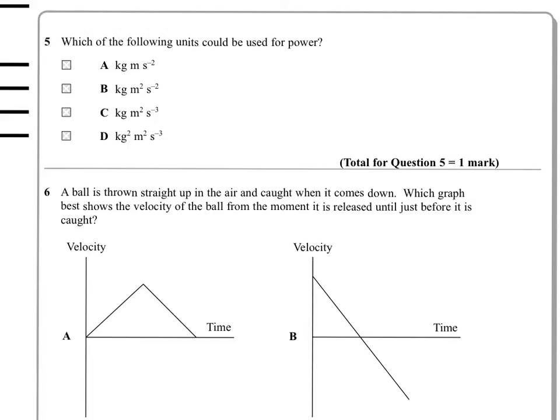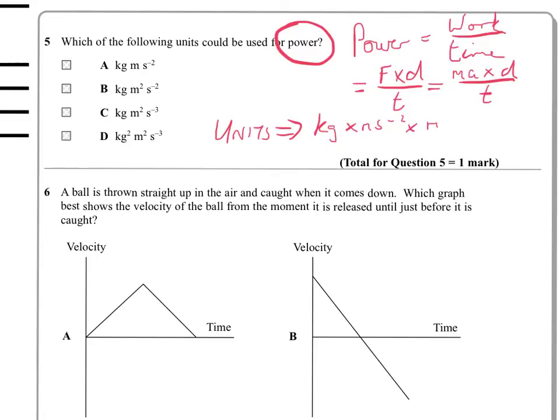Question five. Which of the following units could be used for power? You always do this by trying to figure out an equation for the quantity that you're looking for. We know that power is work over time, and work is force times distance, and F is MA. So the top line here is going to give us mass. We get kilograms times acceleration, meters per second squared, times the distance, which is meters again. And we're going to have to divide by this T.